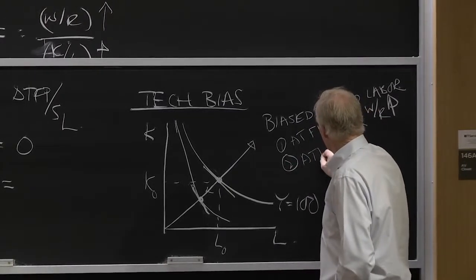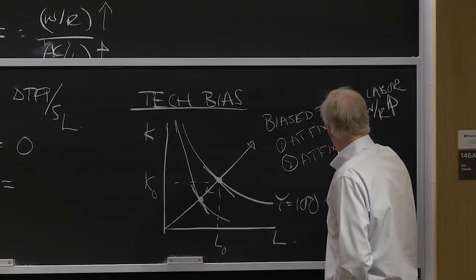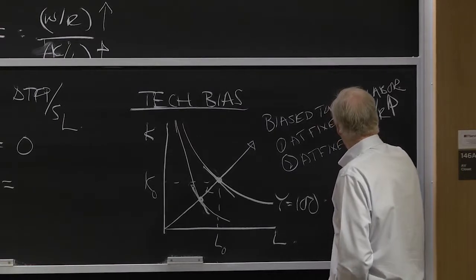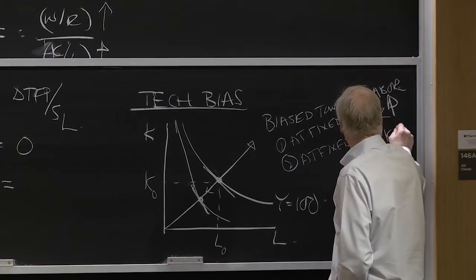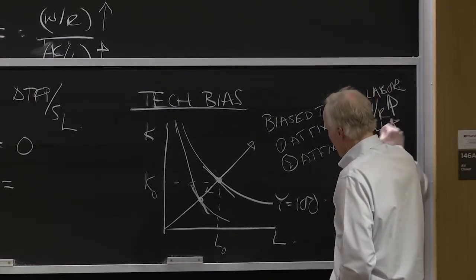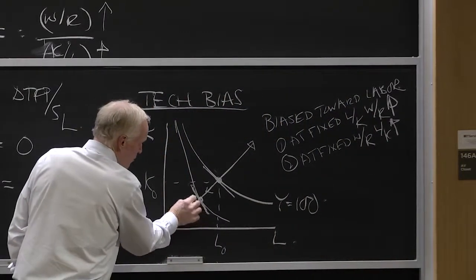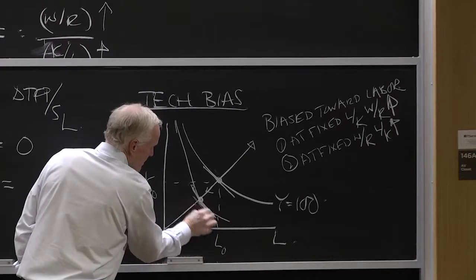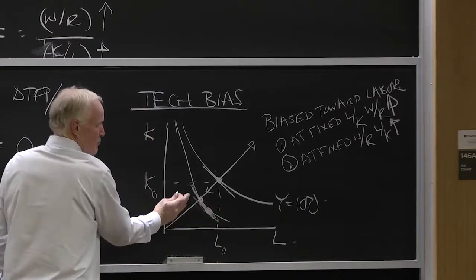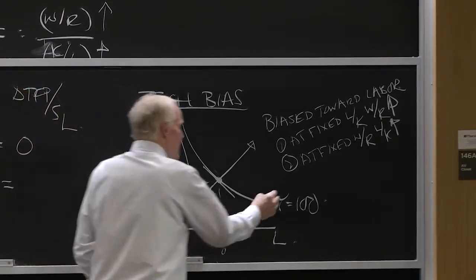Two, at a fixed W over R, L over K is going up. That means that at a fixed rate, at a fixed slope, you're going to substitute toward labor. You're going to move over this way.